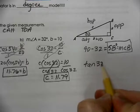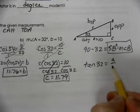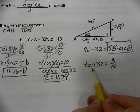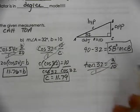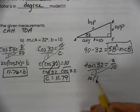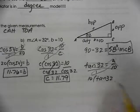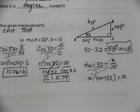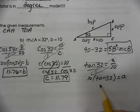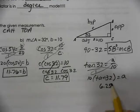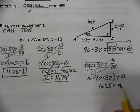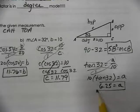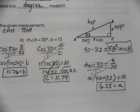So opposite over adjacent is tangent. So tangent of 32 equals opposite over the adjacent. Cross-multiply. 10 times the tangent of 32 equals A. And A is going to be 6.25. So now we know all three sides and all three angles.